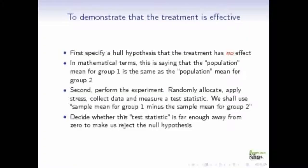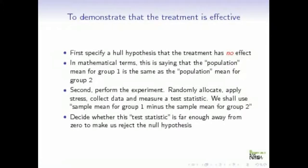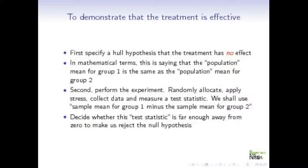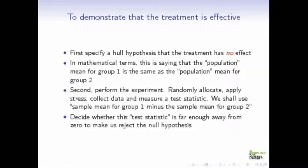To demonstrate that the treatment is effective, we first specify a null hypothesis that the treatment has no effect — this is the hypothesis we wish to disprove. Saying the treatment has no effect is equivalent to saying that the population mean for group one equals the population mean for group two. We allocate the students, collect the data, and measure a test statistic against that null hypothesis.